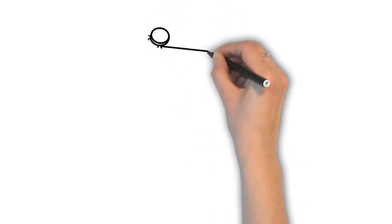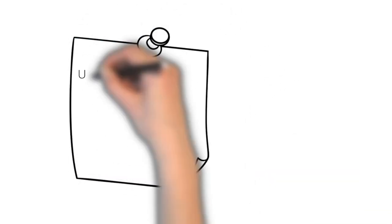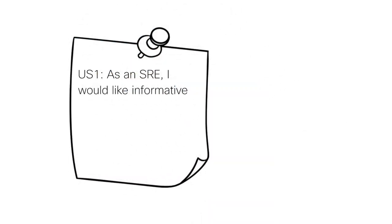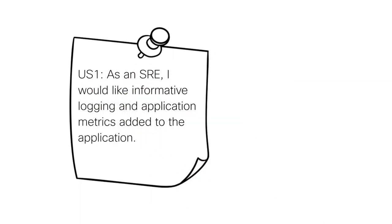In today's Daily Stand-Up, we're going to be talking about two user stories. The first user story is: as an SRE, I want the following metrics to be added to the application. The first one is informative logging, and the other one is application metrics. So let's start with informative logging.